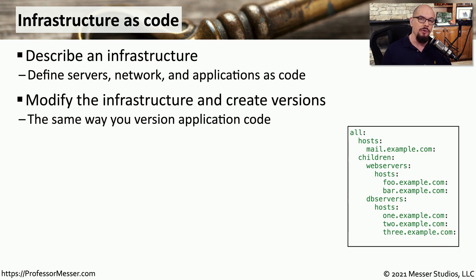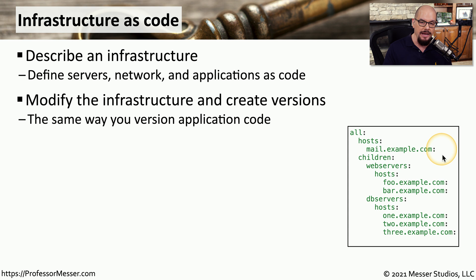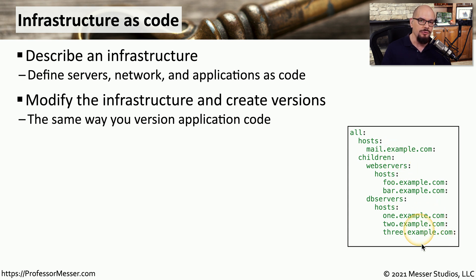This is very similar to writing code for an application, except we're writing code that helps describe the application instances that we would then deploy. For example, we might describe infrastructure as code as being certain hosts, such as mail.example.com. There would be web servers that would also have hosts associated with them, and there would be database servers associated with that application instance. Within this description of the infrastructure, we can add other configuration settings specific to those individual servers.